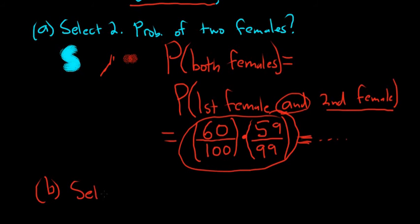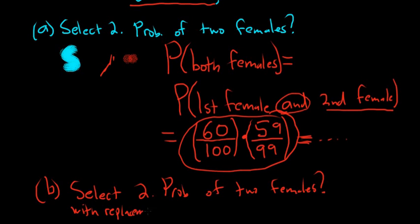Part B. What if we select two? Same thing, probability of two females. But let's slightly change the question. Let's say select two with replacement.